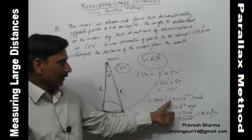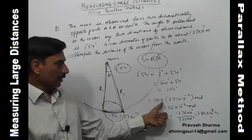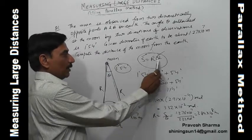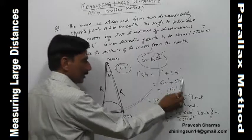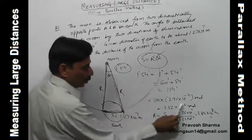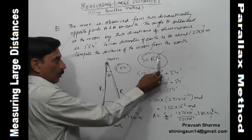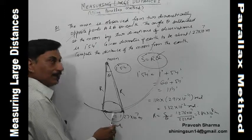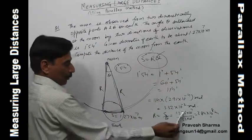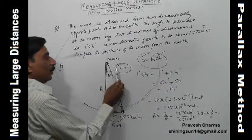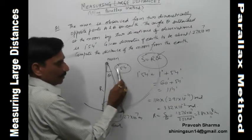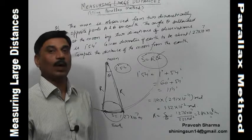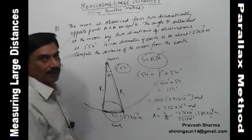We know 1 minute equals 2.91 × 10⁻⁴ radians, so 114 arc minutes equals this many radians — giving us θ in radians. Now using r = s/θ, where s = 1.27 × 10⁷ meters and θ is in radians, we divide and get 3.84 × 10⁸ meters. This is the distance between the Moon and the Earth.